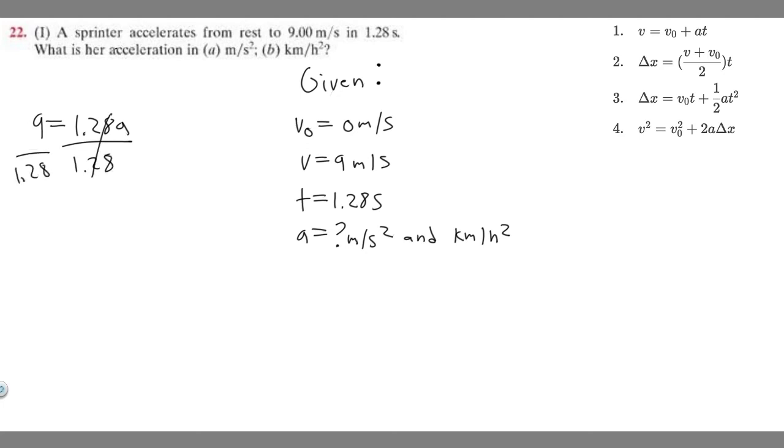We have 9 divided by 1.28. If you plug that in your calculator, a equals 7.03125. You can round however you want; I'm going to make it 7.03. This is going to be in meters per second squared. So the answer to A is 7.03 meters per second squared.